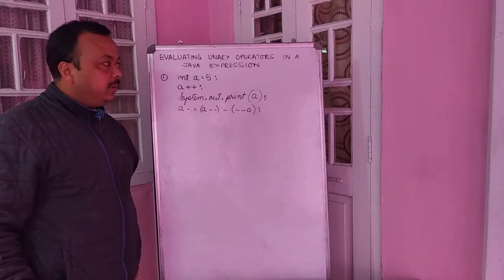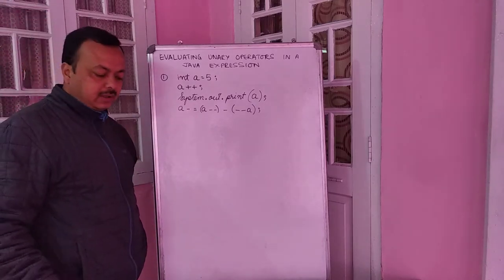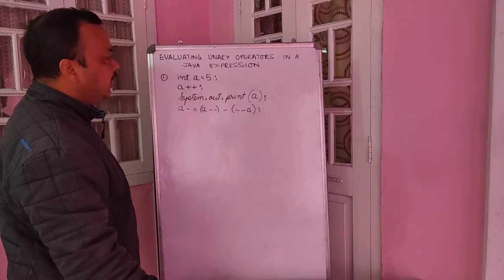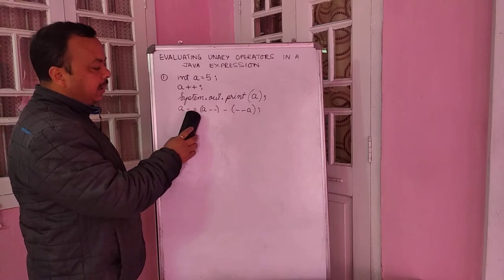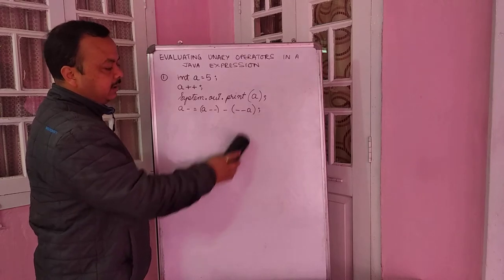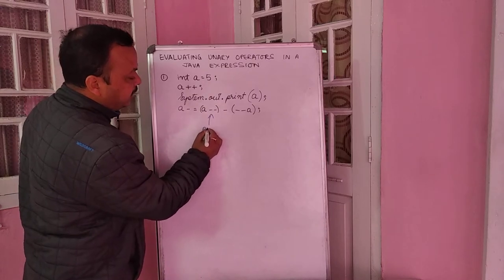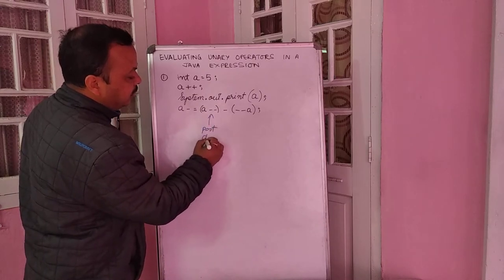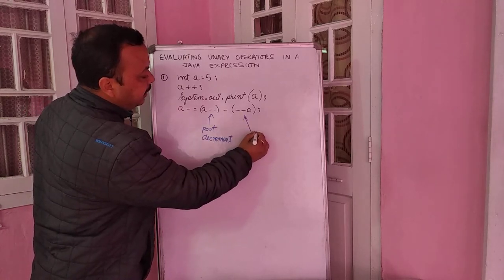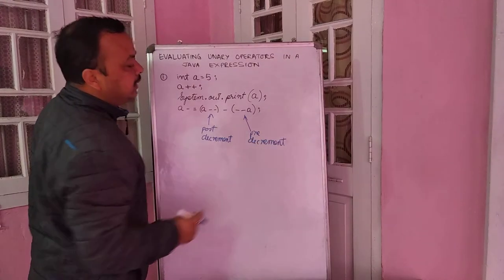Hello students, today we will be talking about evaluating unary operators in a Java expression. I have already written an expression here: a minus-equals a-minus-minus minus minus-minus a. This over here is a post-decrement, whereas this is a pre-decrement. So how do they get evaluated?